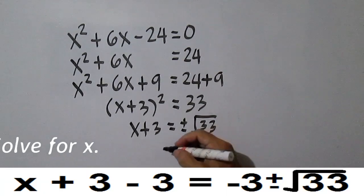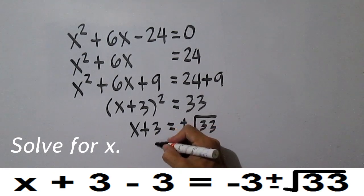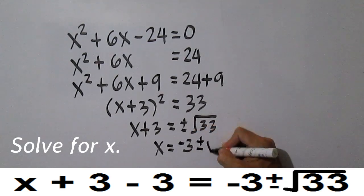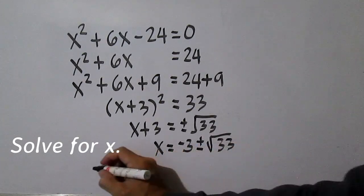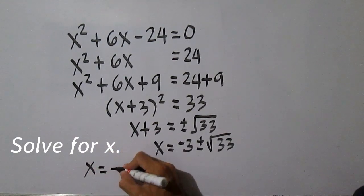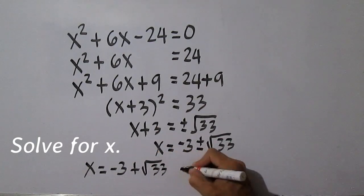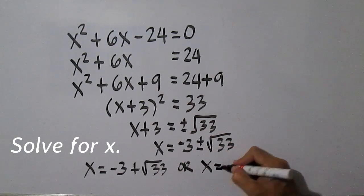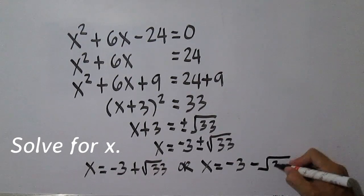Solve the resulting linear equations. The values of x are x equals negative 3 plus square root of 33, or x equals negative 3 minus square root of 33.